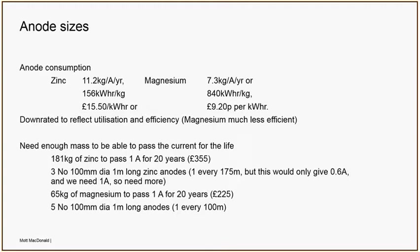For magnesium: 65 kilograms of magnesium gives us one amp for 20 years, costing about £225 on the commodity market. We'd need five of them, so again it's one every 100 meters — that's just how the mass works out in this example. So you size it based on the mass you need and the amount of current you can get out of the anodes.